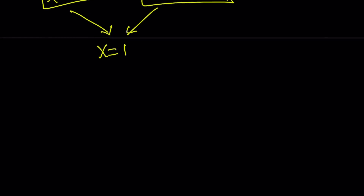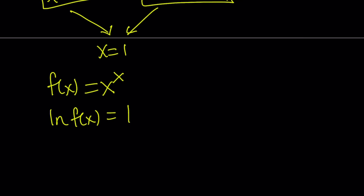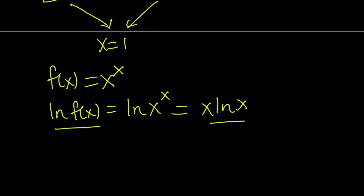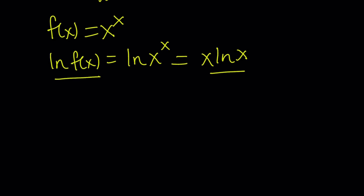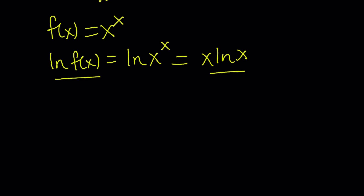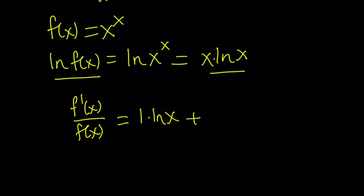Now let's take a look at two functions. Suppose our first function is f of x equals x to the power x. Let me ln both sides: ln f of x equals x times ln x. Differentiating both sides, the chain rule gives f prime over f equals the product rule applied to x times ln x, which gives ln x plus 1 over x times x. Those cancel, leaving 1.